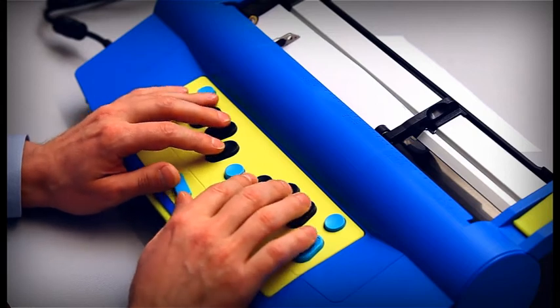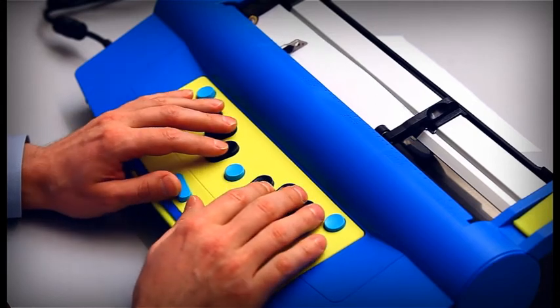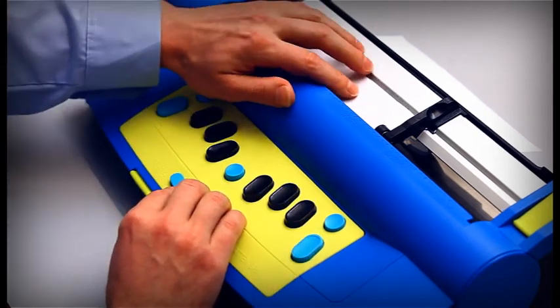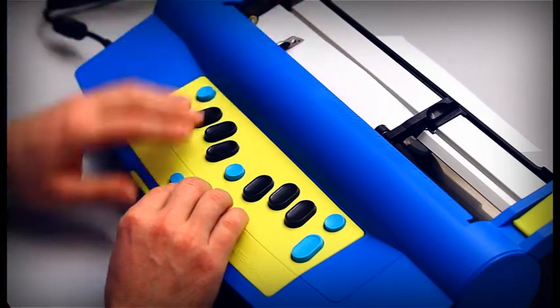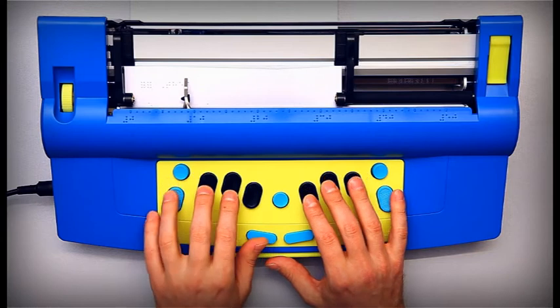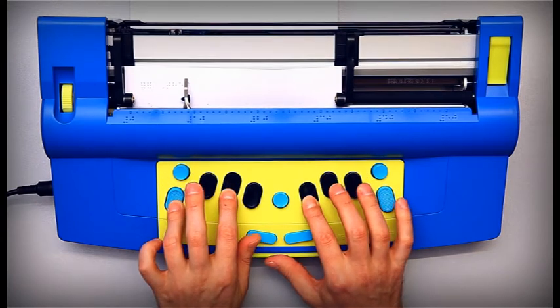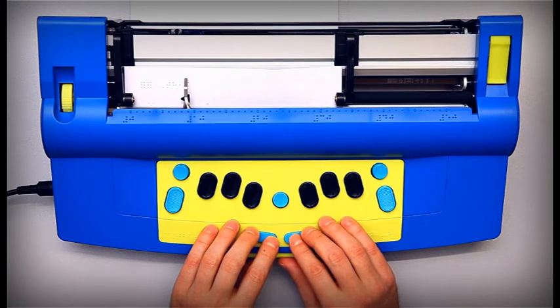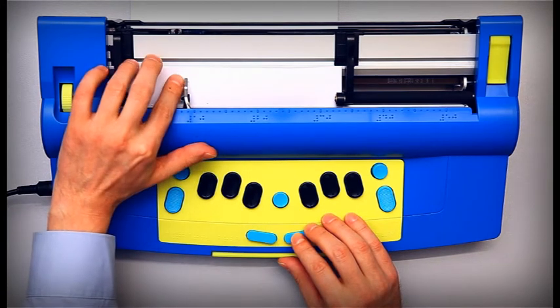Don't worry if you make a mistake while typing. It is very easy to correct your mistyped characters. When the head is placed right after the mistyped character, press Backspace together with the correct dots. The Mountbatten will say Correcting and the new character will be embossed.